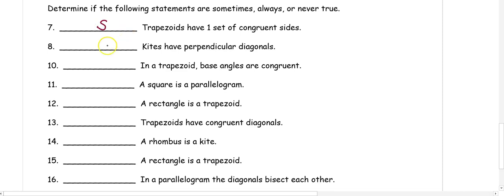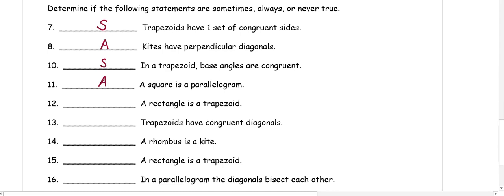Kites have perpendicular diagonals — this is always true because that's a property of kites. In a trapezoid, base angles are congruent — this is sometimes true because base angles are congruent only in an isosceles trapezoid; in a regular trapezoid they're not. Number 11: a square is a parallelogram — squares always have all the properties of parallelograms, so this is always true. A rectangle is a trapezoid — a rectangle has two sets of parallel sides while a trapezoid has only one, so this is never true.